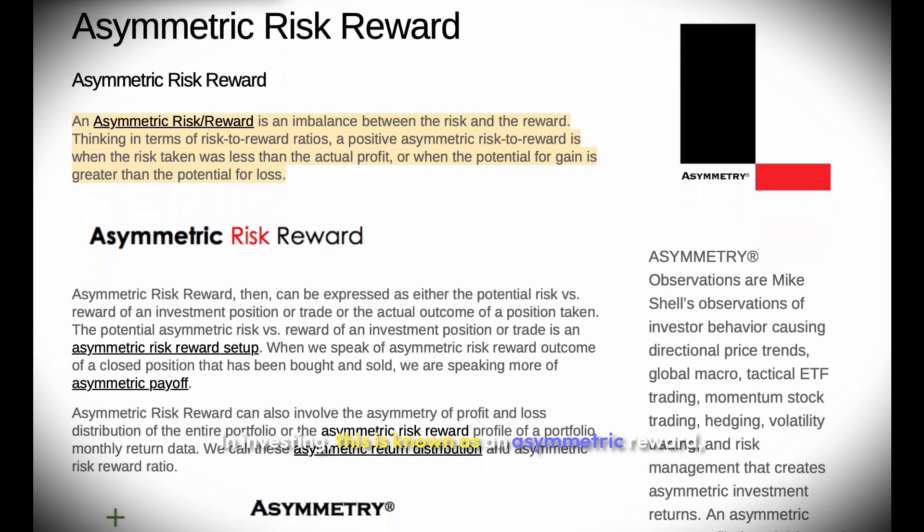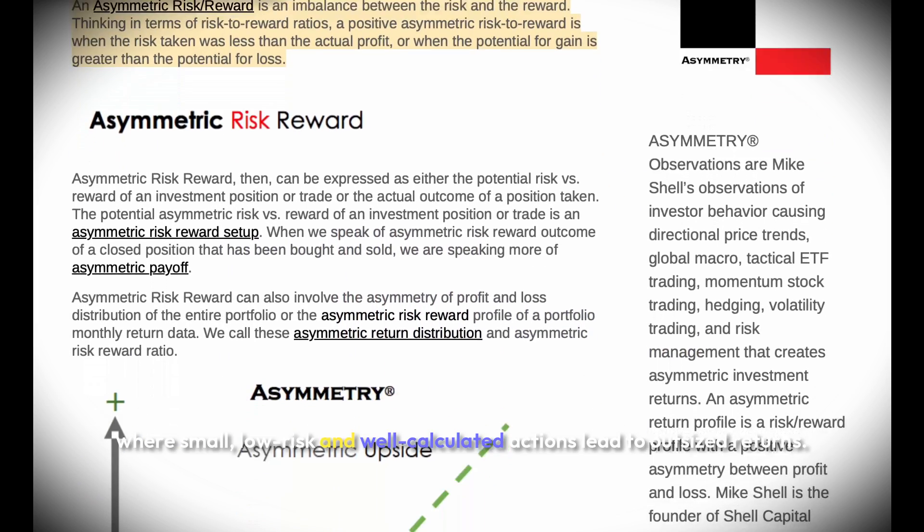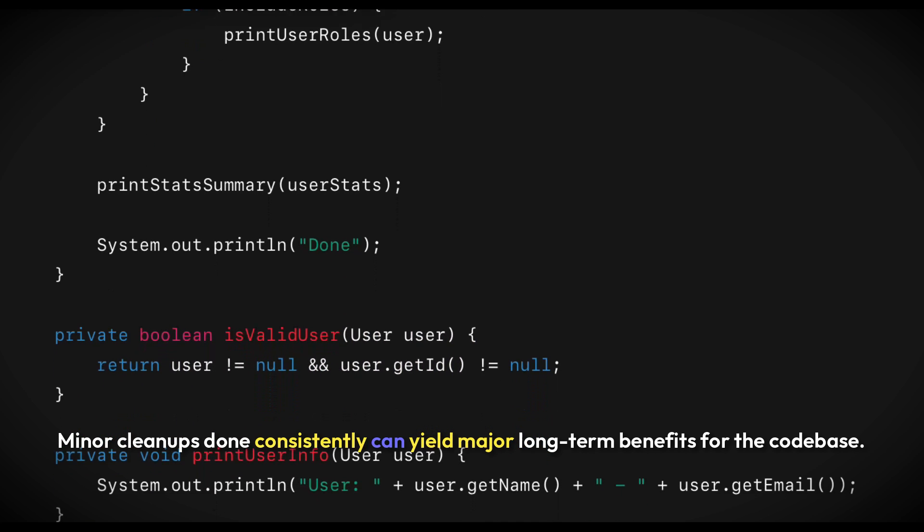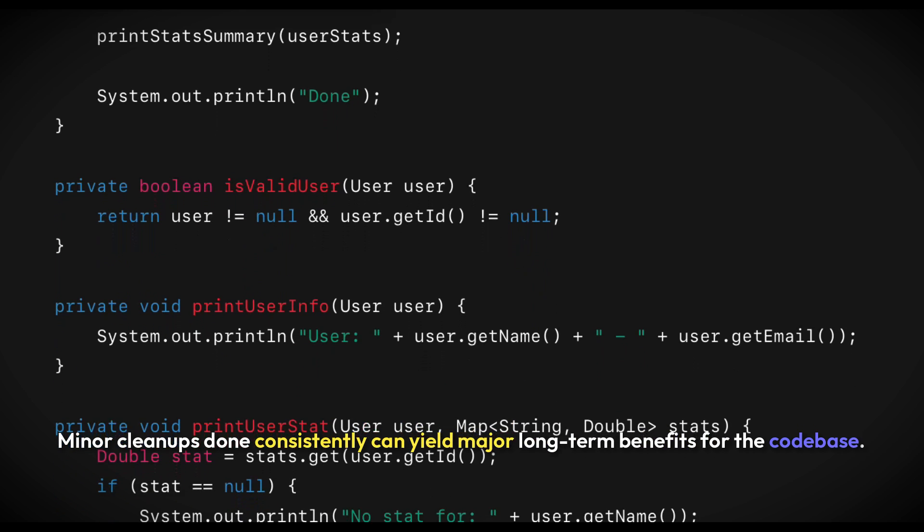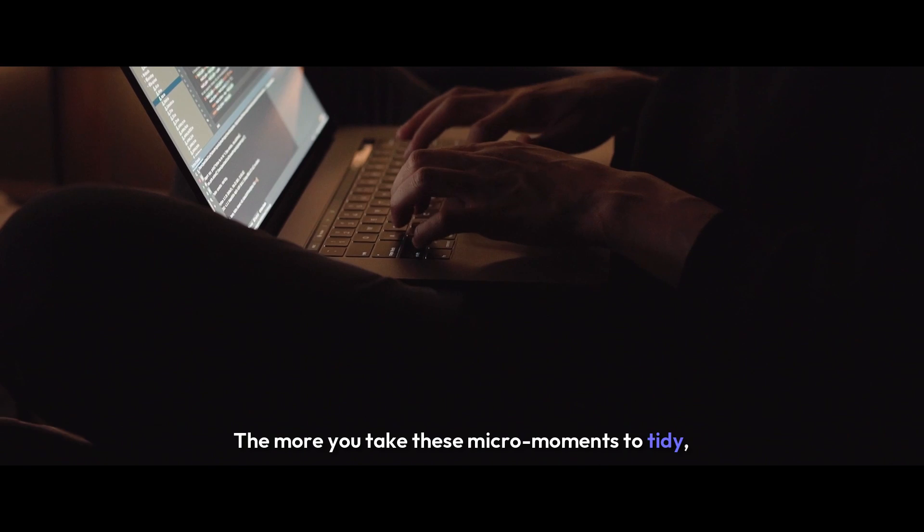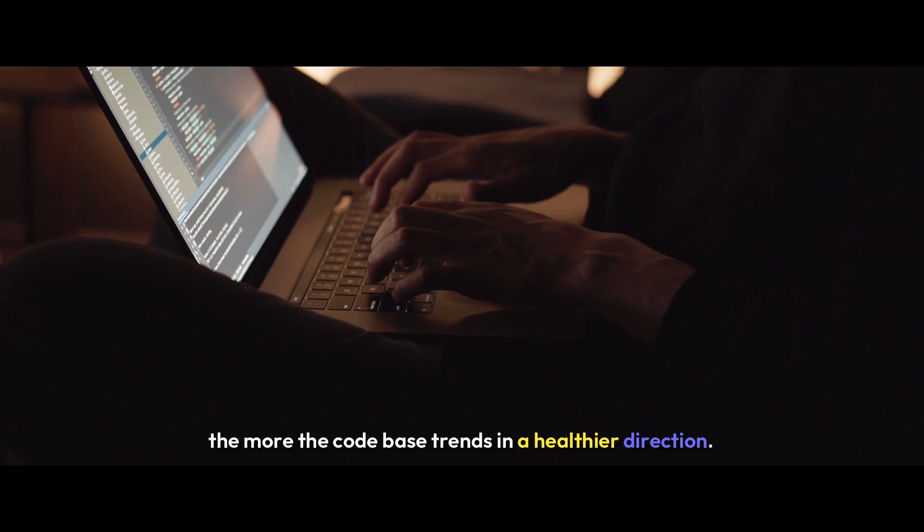In investing, this is known as an asymmetric reward, where small, low-risk, and well-calculated actions lead to outsized returns. Refactoring can work the same way. Minor cleanups done consistently can yield major long-term benefits for the code base. These small opportunistic improvements compound over time. The more you take these micro-moments to tidy, the more the code base trends in a healthier direction.